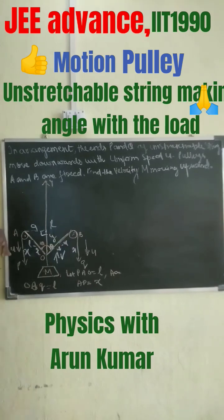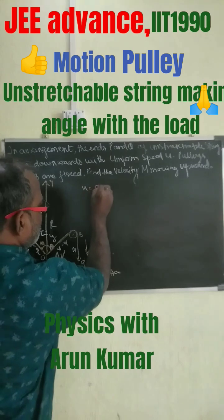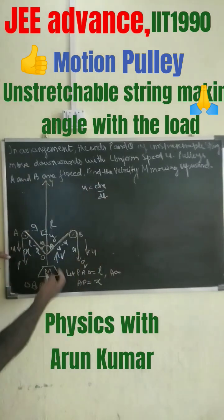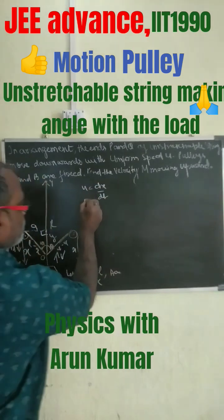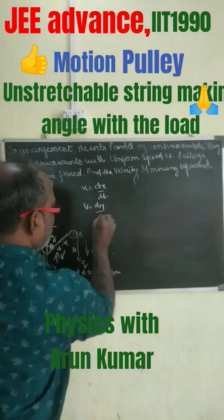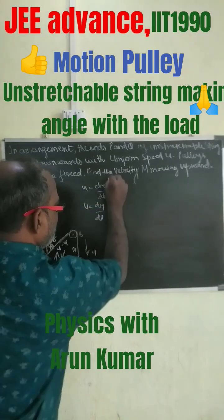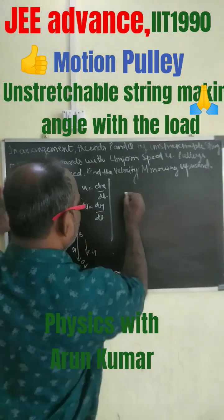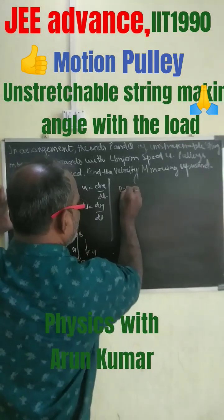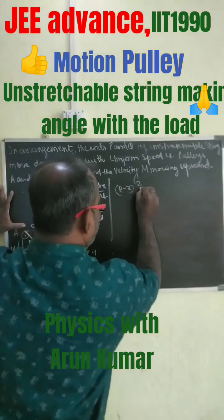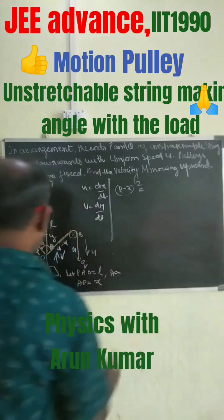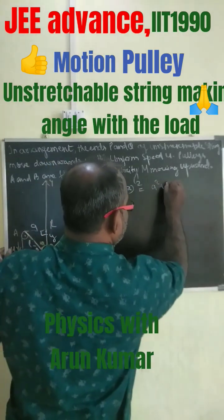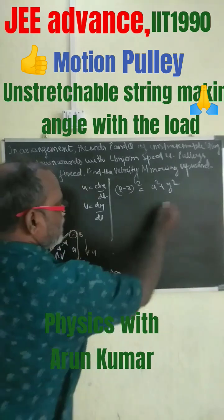Now since the velocity u is given here, u equals dx by dt. Similarly, v equals dy by dt. Again, from the right angle triangle AOR, we have: (L minus x) whole square equals a squared plus y squared.